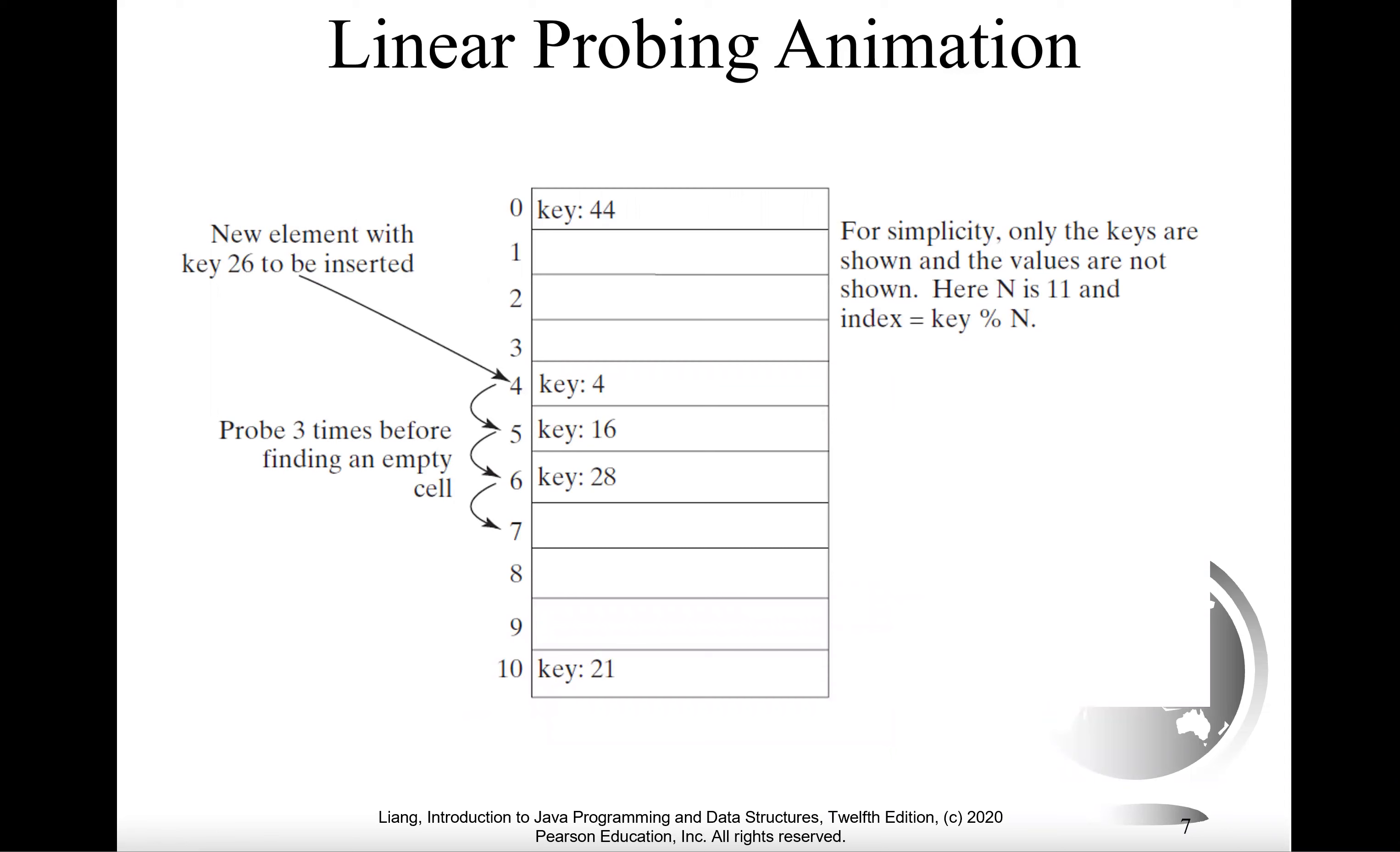Now what happens when you have this hash function and the hash function maps multiple keys to the same location? This will cause a collision. We can process the collision using an approach called linear probing.